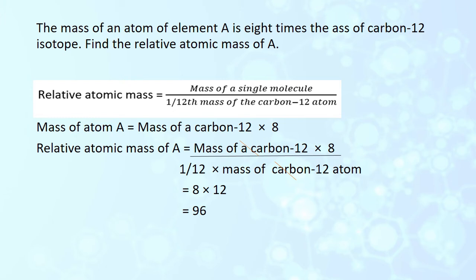Example: the mass of an atom of element A is 8 times the mass of the carbon-12 isotope. We have to find the relative atomic mass. Writing the formula, the mass of atom A is 8 times the mass of carbon-12. Substituting into the relative atomic mass formula and cancelling common terms, we finally get the answer 96.